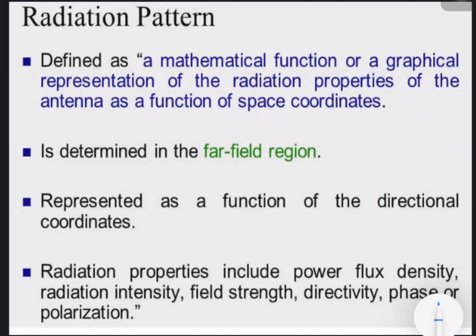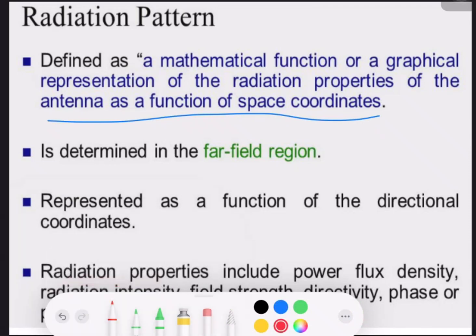The radiation properties of the antenna include the power flow density, radiation intensity, field strength, directivity, phase, and polarization of the signal. So, a radiation pattern of an antenna is the graphical representation of the radiation properties of the antenna as a function of space coordinates. This is the definition of the radiation pattern.